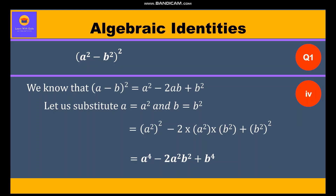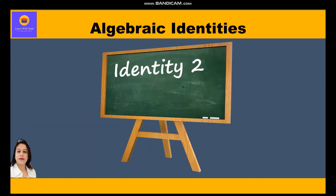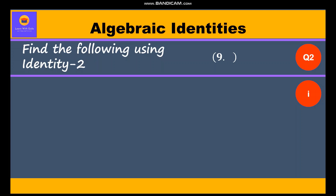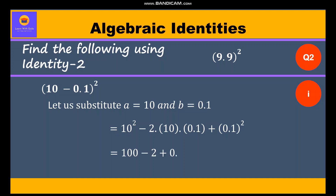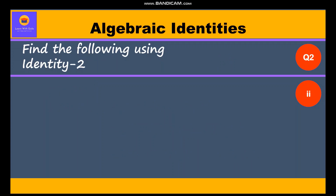This is how we solved the first type of question related to identity 2. Now we shall move to the second type of question. The first part is 9.9 whole square, which can be written as (10 minus 0.1) whole square. We substitute a equal to 10 and b equal to 0.1, giving 10² minus 2 times 10 times 0.1 plus 0.1², which equals 100 minus 2 plus 0.01, equal to 98.01.